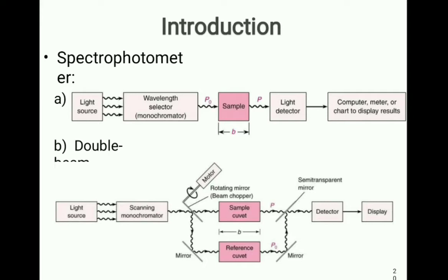Firstly, we have a light source that will produce a polychromatic light. After that, we have a wavelength selector — that is our monochromator — that allows only the passage of a single wavelength. Then we have a sample holder connected to the light detector. This detector will measure the amount of light transmitted and convert it into an electrical signal, which can be seen on a computer or a chart to display results.